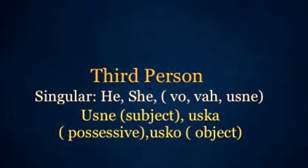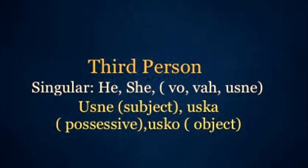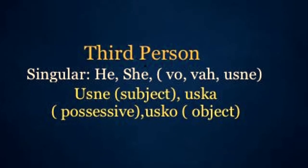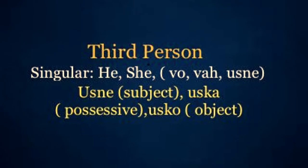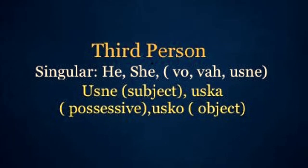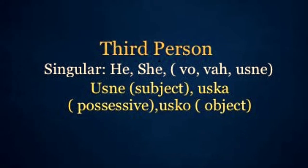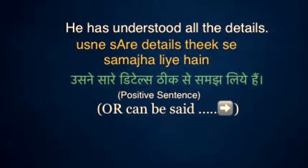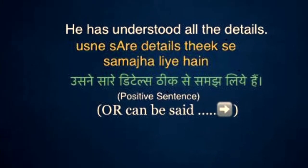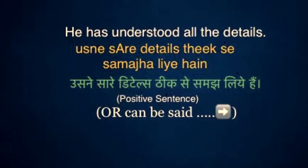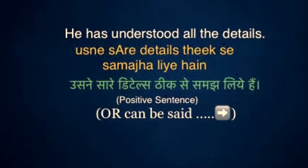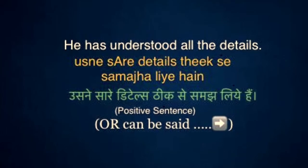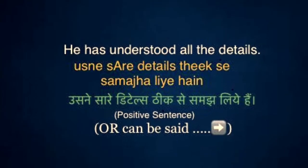Third person, singular — he, she, wo, veh, usne. Usne, uska, usko. He has understood all the details — Usne sare details thik se samaj liya hai.